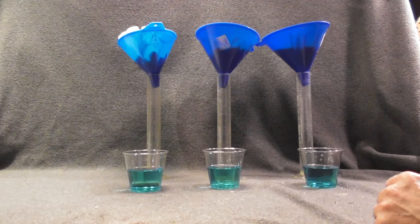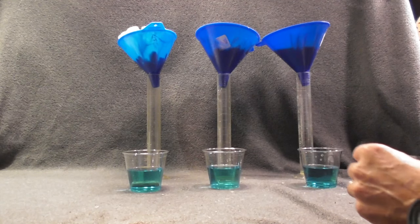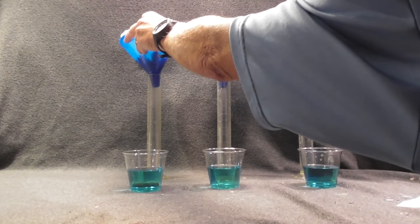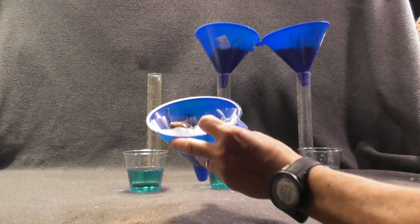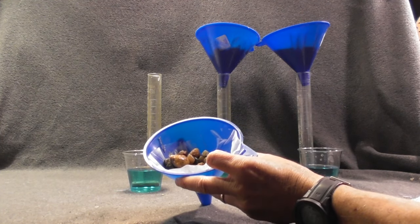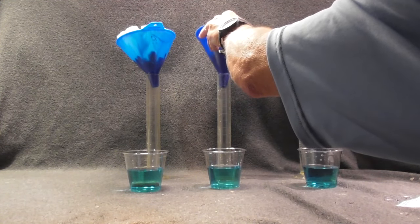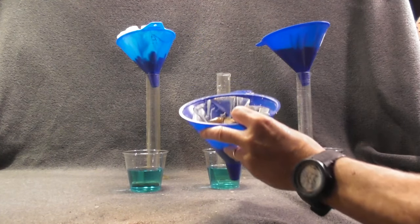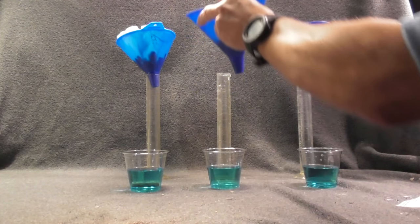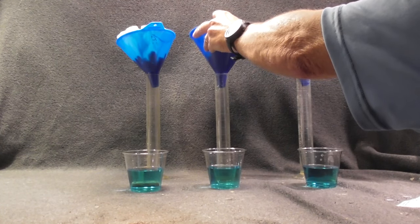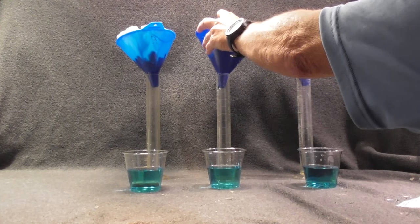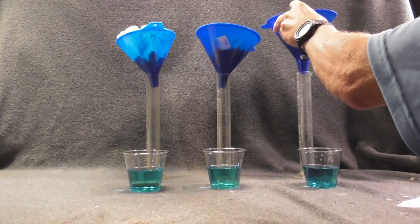Up first is permeability, which is the ability of liquids and gases to flow through rock. For the demo, I have three different types of materials: just gravel, then gravel and sand which might be material that would make up an aquifer that stores underground groundwater, and then sand.